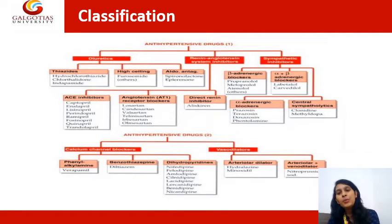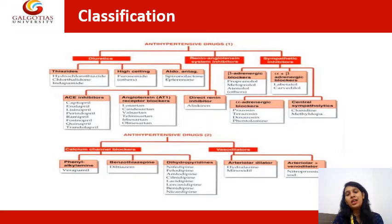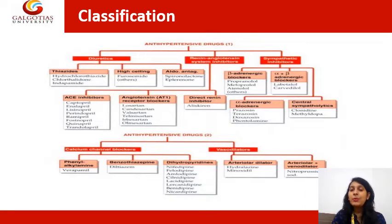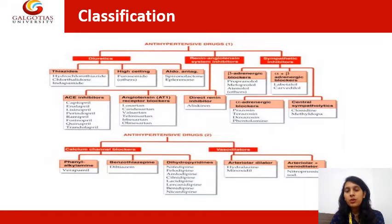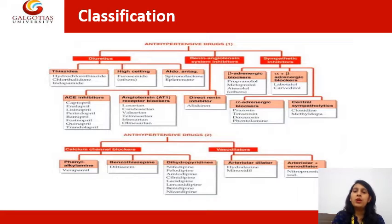Propranolol can be considered a selective beta blocker, but we can define beta-1 receptor blockers and beta-2 receptor blockers — it can block both. It can block preferentially beta-1 and beta-2 as well. The third subcategory is alpha-adrenergic blockers, which are selective.